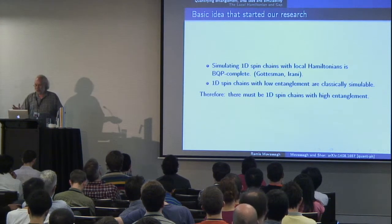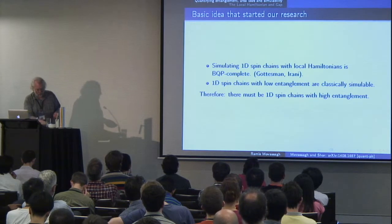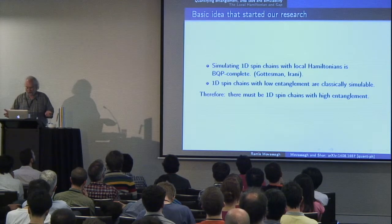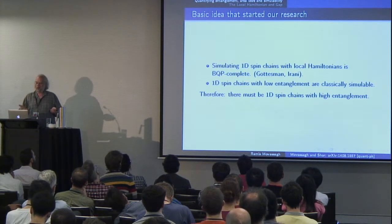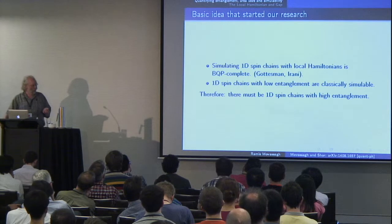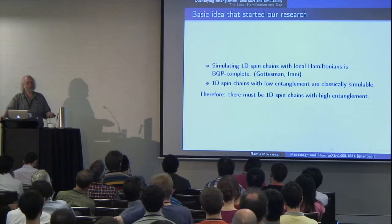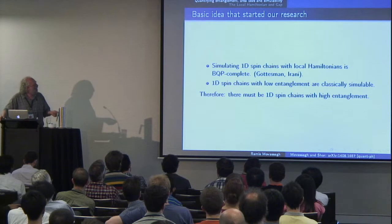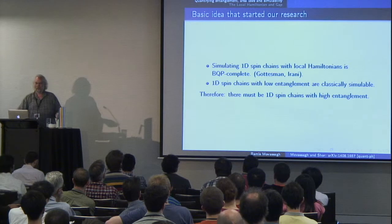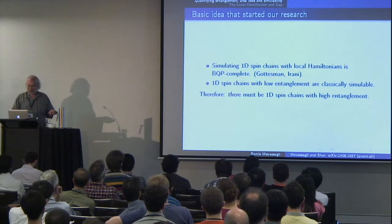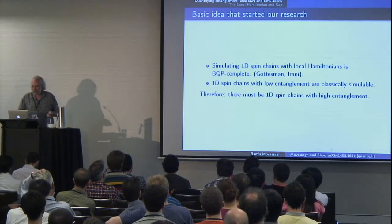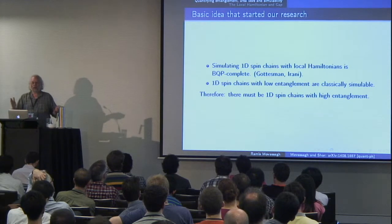So now we can worry about the idea that started our research. We knew that simulating 1D spin chains with local Hamiltonians was BQP-complete, which means we think it can't be done classically. And we know that 1D spin chains with low entanglement are classically simulable, and therefore there must be 1D spin chains that have high entanglement and therefore violate the area law.